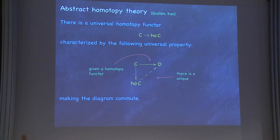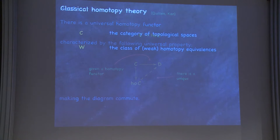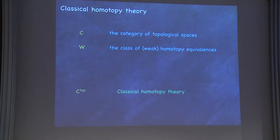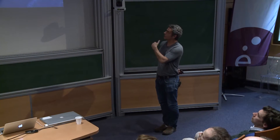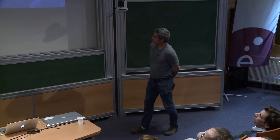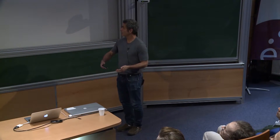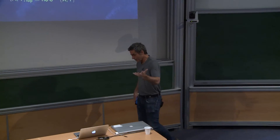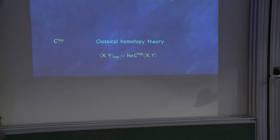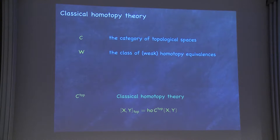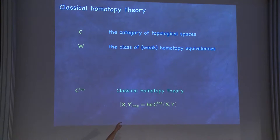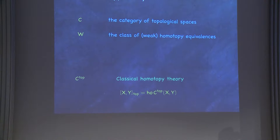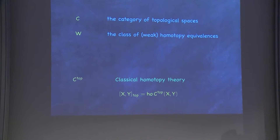There's a universal homotopy functor: given a homotopy functor, there's a unique functor making the diagram commute. The classical example is topological spaces, where the weak equivalences are the maps that induce isomorphisms of homotopy groups at all possible choices of base points — that becomes classical homotopy theory, with the homotopy category being the usual homotopy category of CW complexes. I'll abbreviate with square brackets and some subscript to indicate the context.